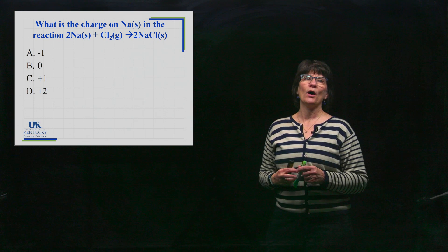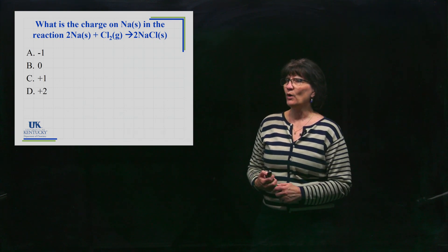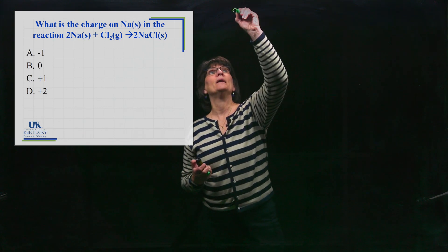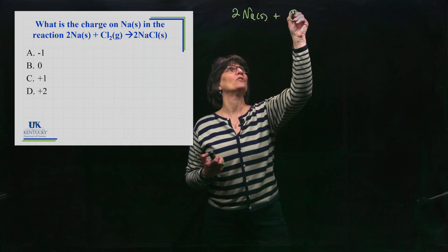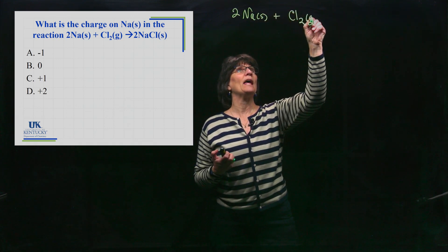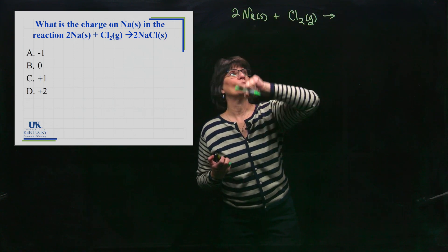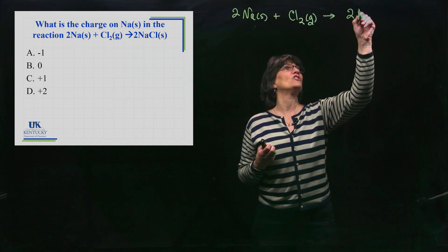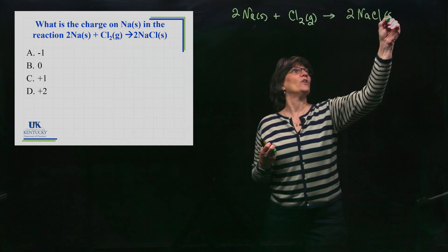Hopefully you said zero. I trip up a lot of students when they find out that it's zero—they get a little shocked by that notion. But one of the first rules for determining oxidation numbers is that elements in their stable form, you take an element, and it's always going to have an oxidation number of zero.